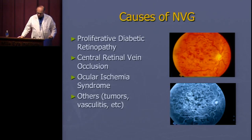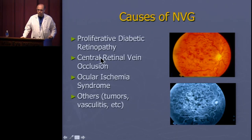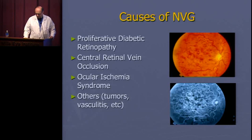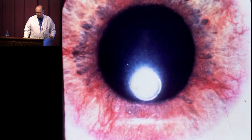You always want to look for the cause of anterior segment neovascularization — it's really either going to be diabetic or CRVO, the leading causes by far. But also consider ocular ischemia syndrome and carotid disease. Less common reasons include tumors, vasculitis, and longstanding retinal detachment.